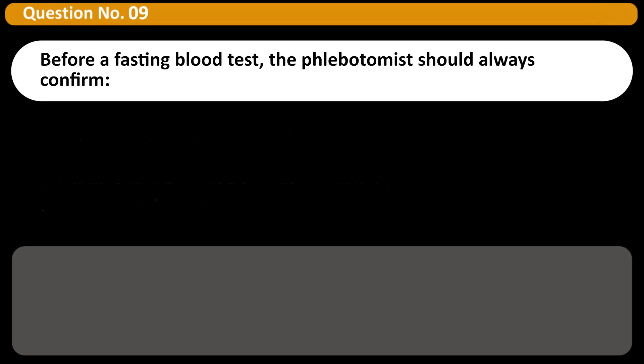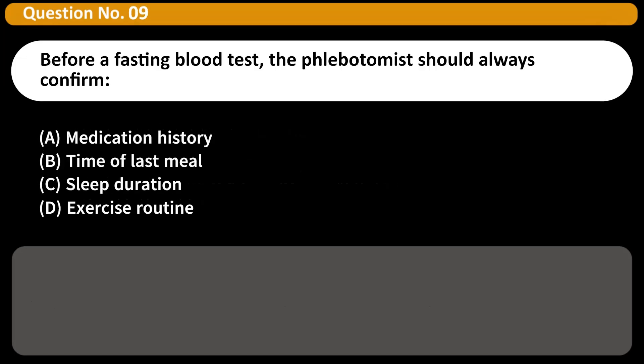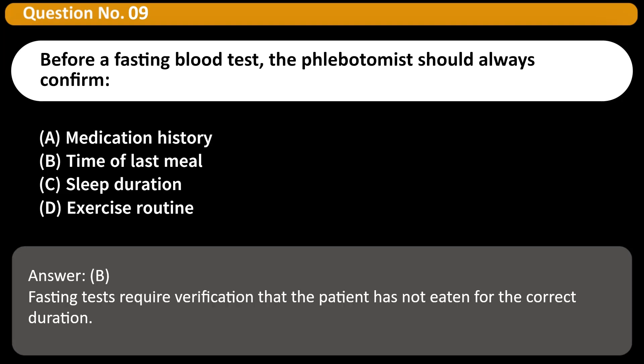Before a fasting blood test, the phlebotomist should always confirm: A. Medication history. B. Time of last meal. C. Sleep duration. D. Exercise routine. Answer: B. Fasting tests require verification that the patient has not eaten for the correct duration.